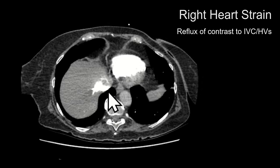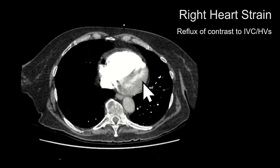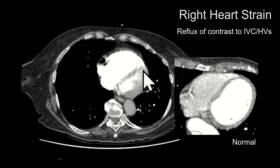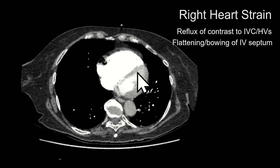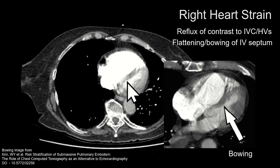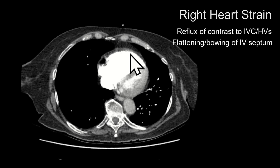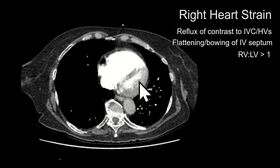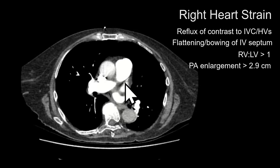Because pressures in the left heart are usually much higher than on the right, the left ventricle usually has a convex impression onto the right ventricle. With right heart strain you may see flattening of the interventricular septum or even bowing towards the left ventricle. With increased pressures in the right heart, the right ventricle can increase in size — if the RV-to-LV ratio is greater than one, that is also a CT finding of right heart strain, along with enlargement of the pulmonary artery.